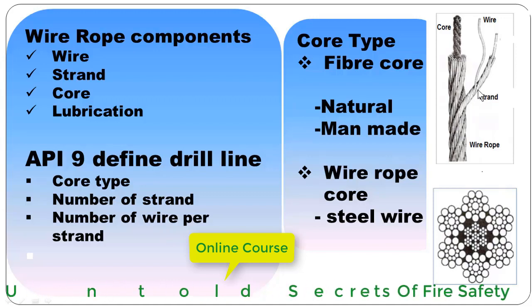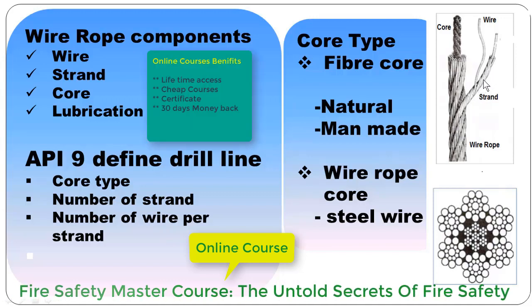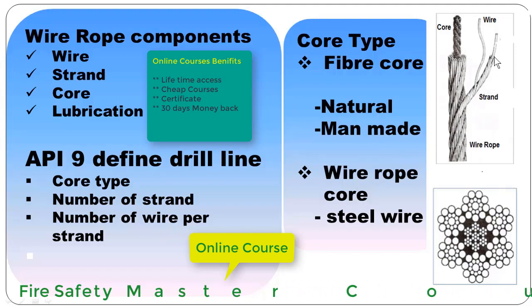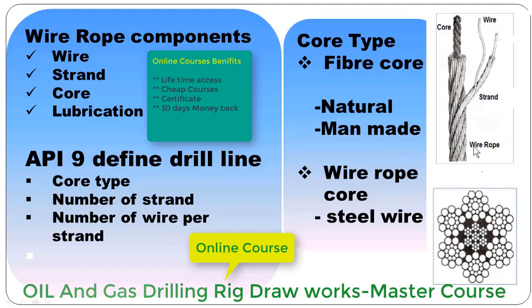And this is called core. Whereas all these components, they made a wire rope, so this is called a wire rope. The cut view of a drilling line or wire rope, you can see it looks like something like this.